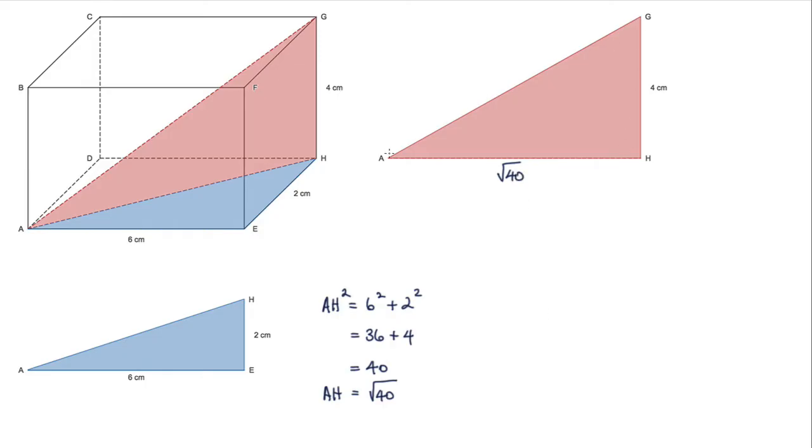Now I've got this triangle, I can use Pythagoras again with AG. AG squared equals the square root of 40 squared plus 4 squared.